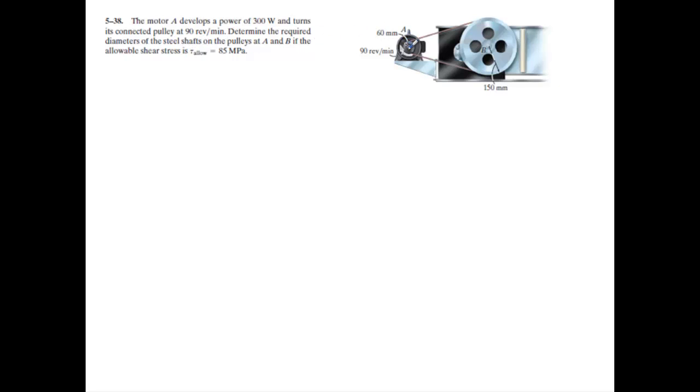The first thing to do with this problem here is we're going to go ahead and define what the angular rotation or angular velocity would be here. We can say omega is going to be equal to 90 revolutions over a minute. We're going to convert that to radians per second. I'll multiply that by 2π radians over 1 rev. Revolutions cancel out. Now we want to go to seconds. I'll put 1 minute here, 60 seconds down here.